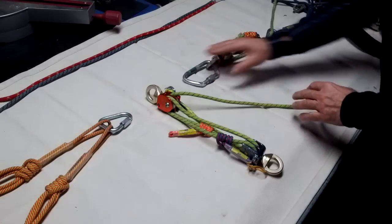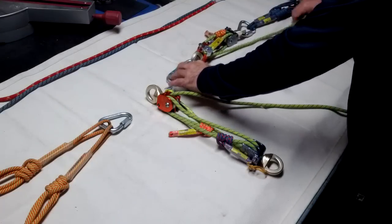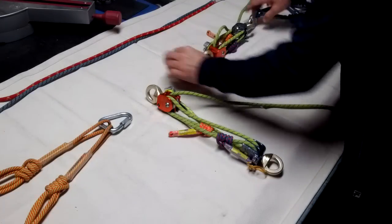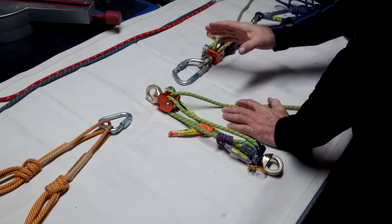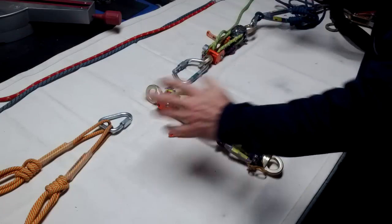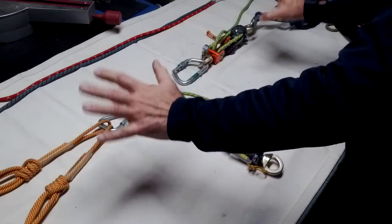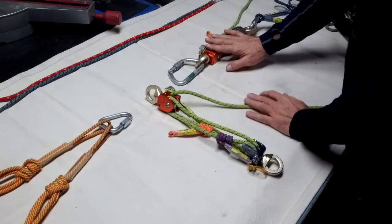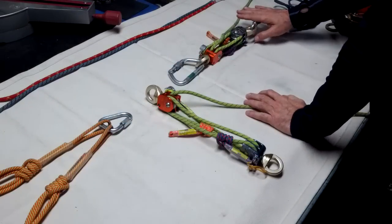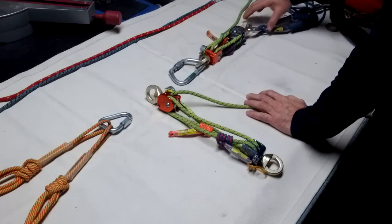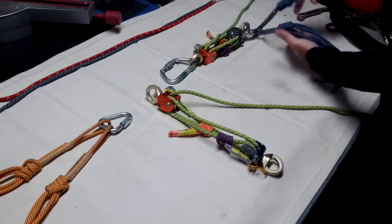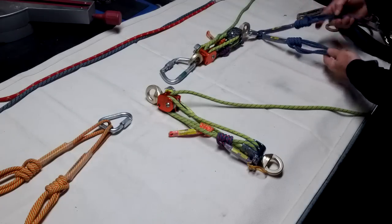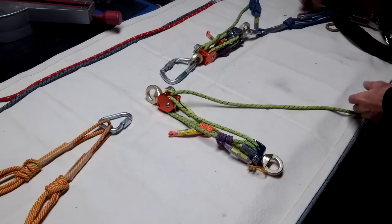For the foot section of the stretcher, we've got a carabiner. This is so we can release it if we need to convert to a vertical stretcher rig. This is for the horizontal. We have another set of fours that goes to the foot end of the stretcher, another steel tri-link, and the shorter blue Purcell Prussiks on either side of the stretcher.